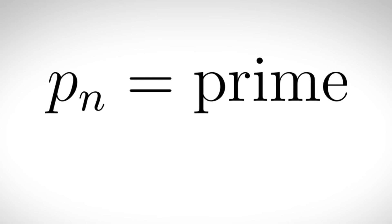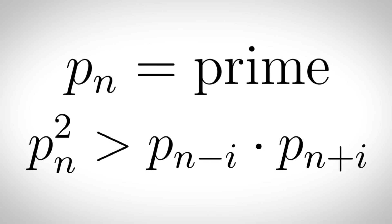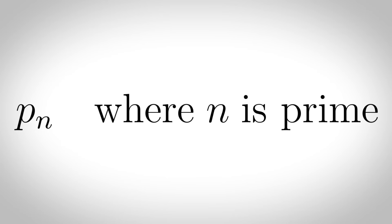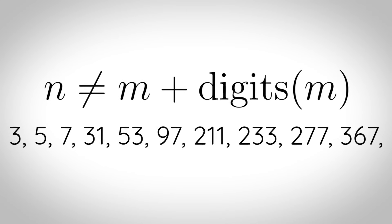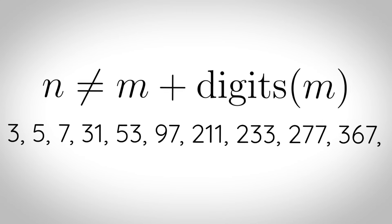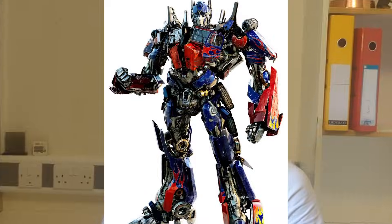Good primes: if p sub n is the nth prime number then a good prime satisfies a specific inequality. Super primes: if p sub n is the nth prime number then a super prime is p sub n where n is also prime. Self primes: a self number n is a number which cannot be generated by any number m added to the digits of m. Some of these are prime.